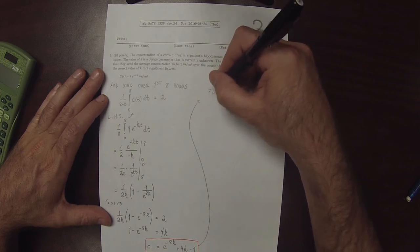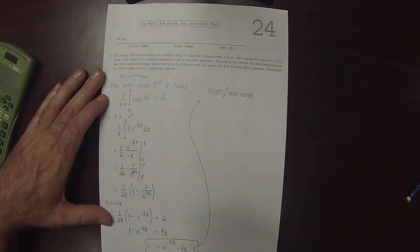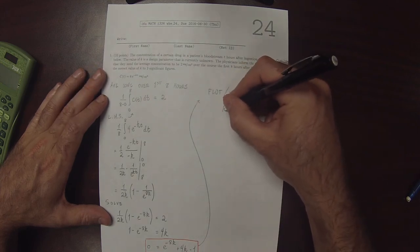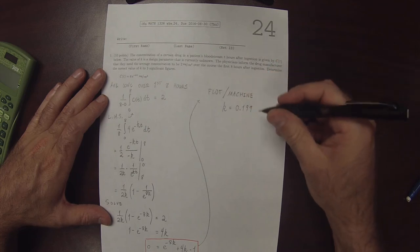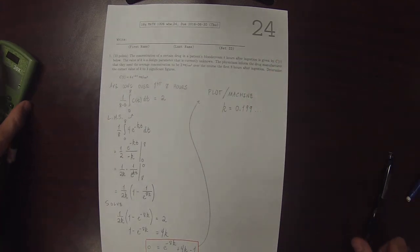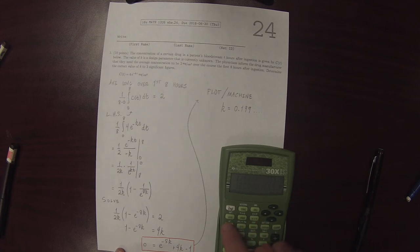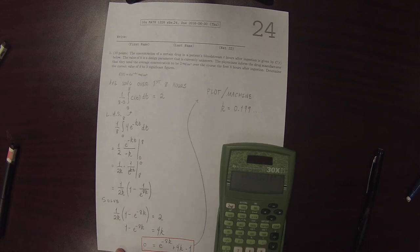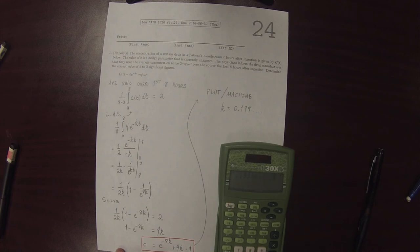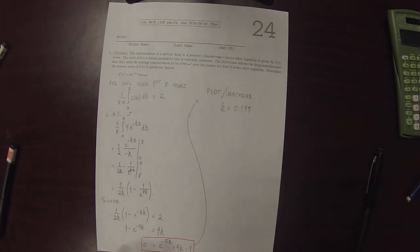So through some kind of plot or other machine, you can determine that the solution to this equation is K, it starts out with 0.199, and then continues. So let's see if that really is the solution. So exponential negative 8 times 0.199, plus 4 times 0.199, minus 1, is approximately 0. And that's the solution to the exercise.